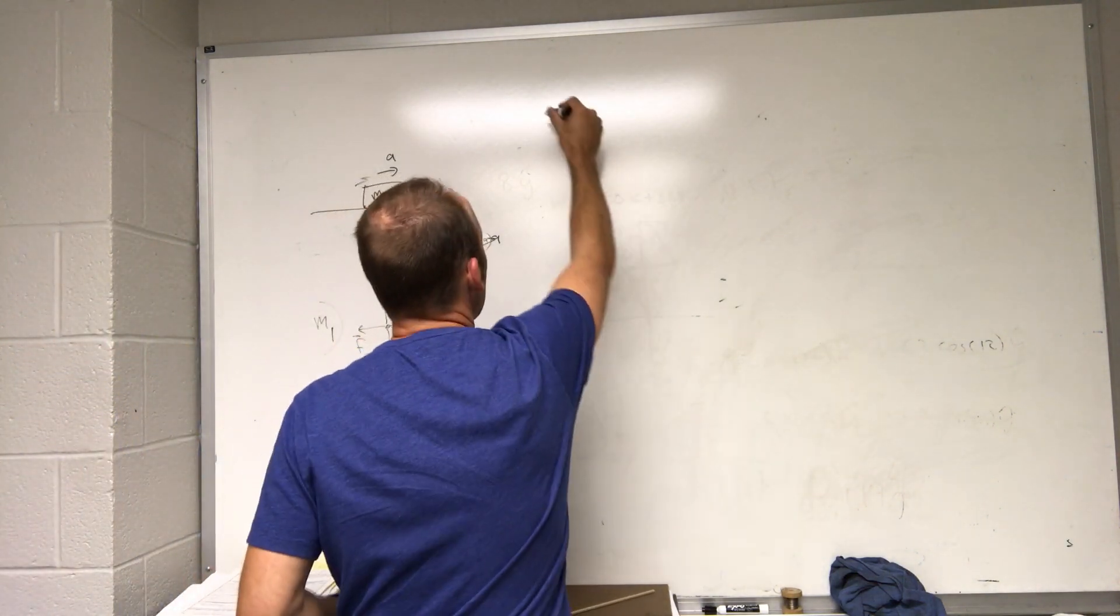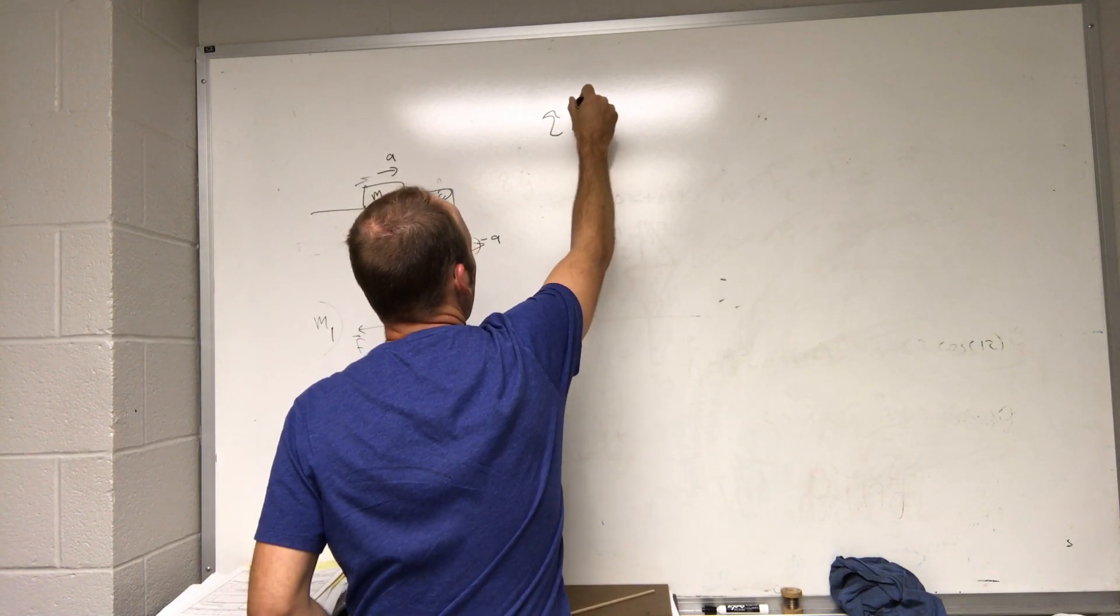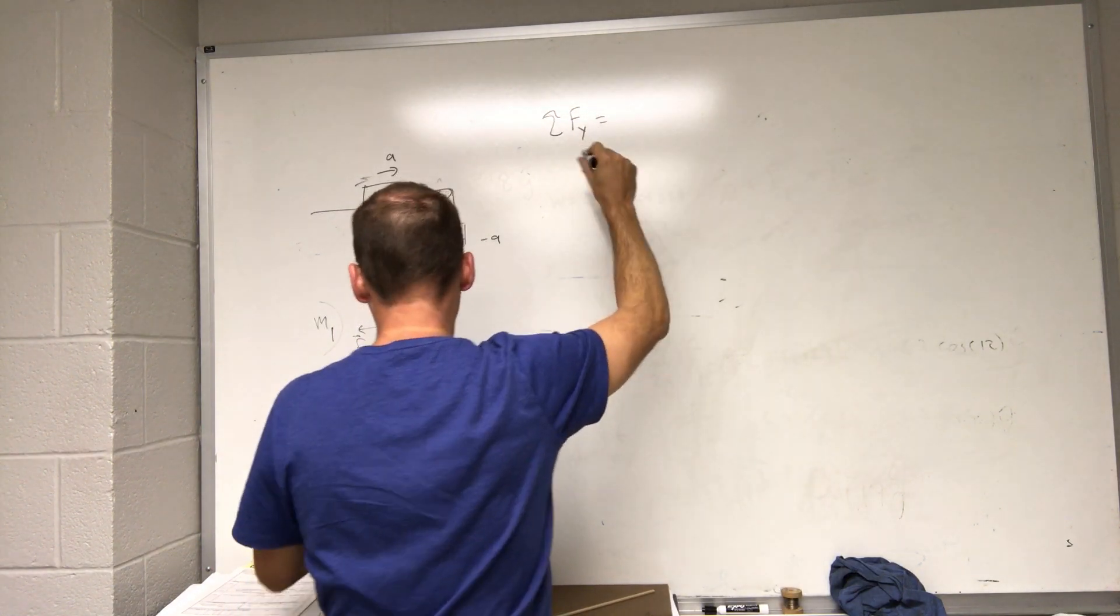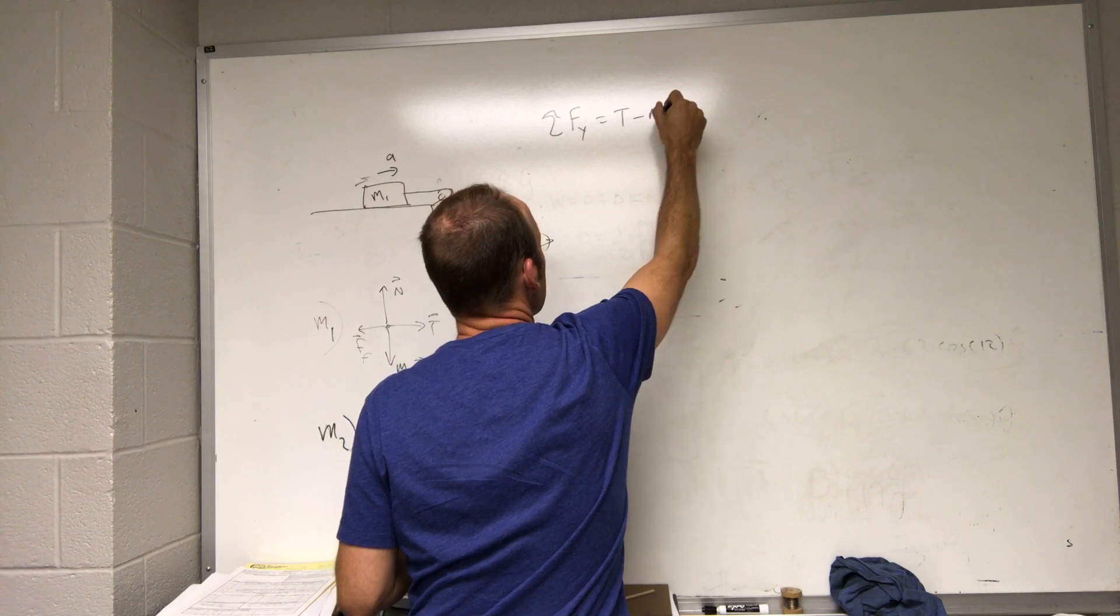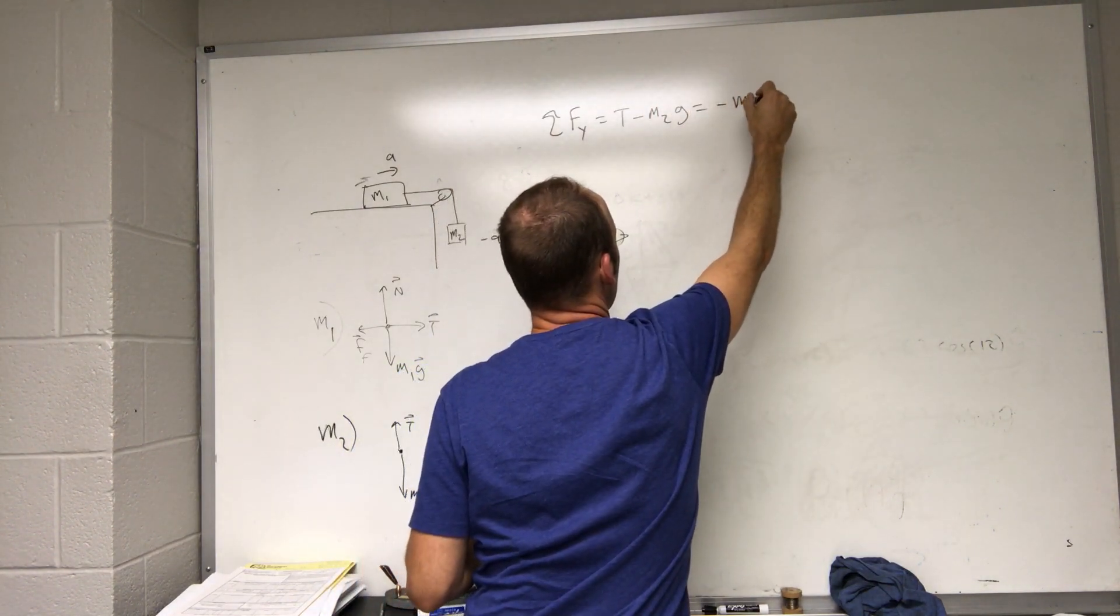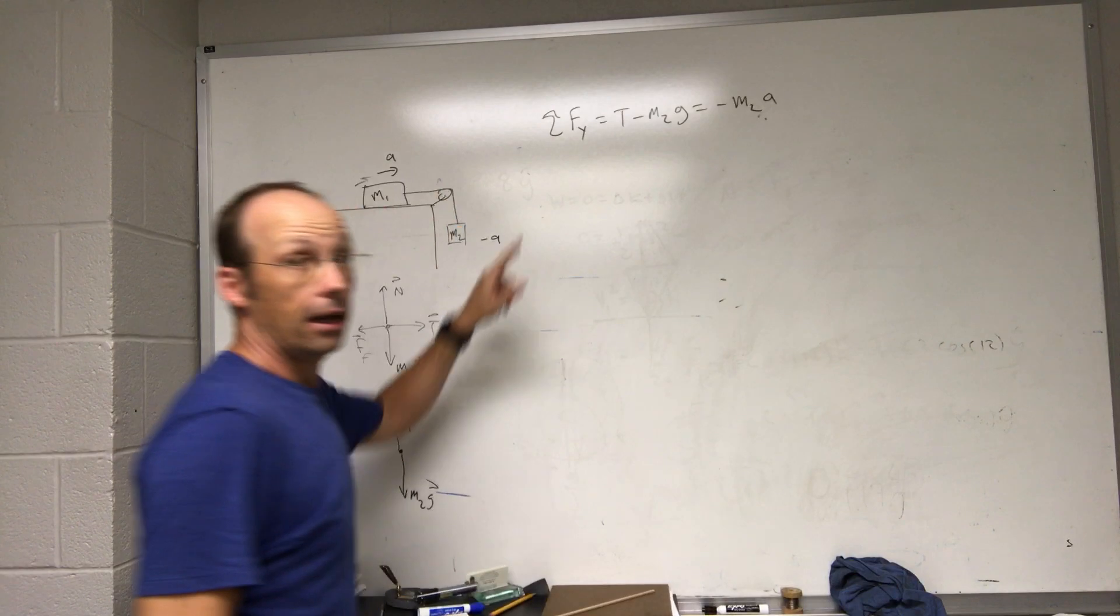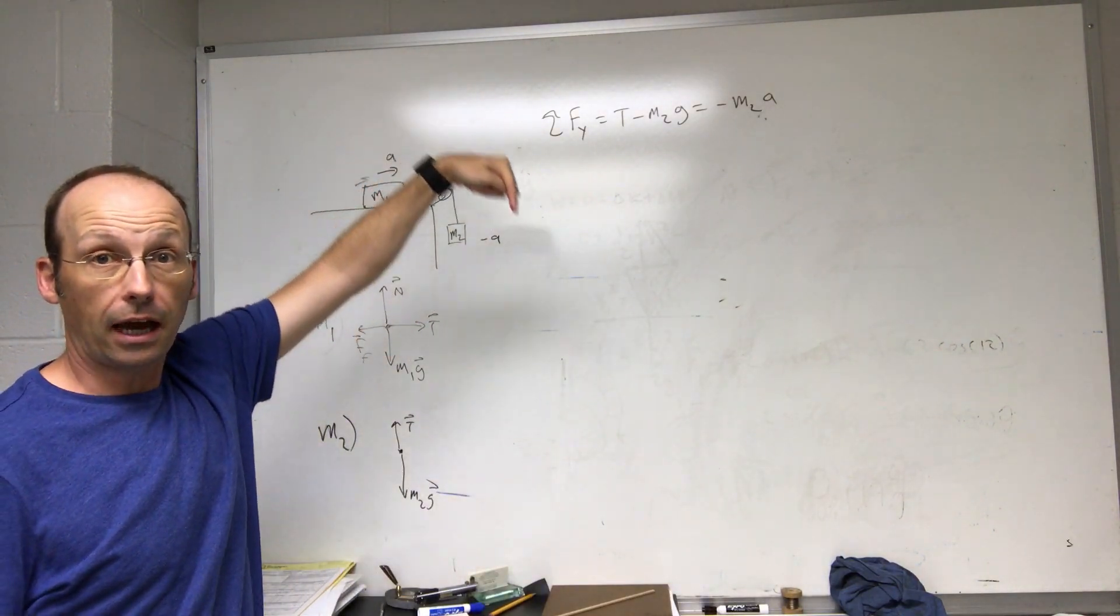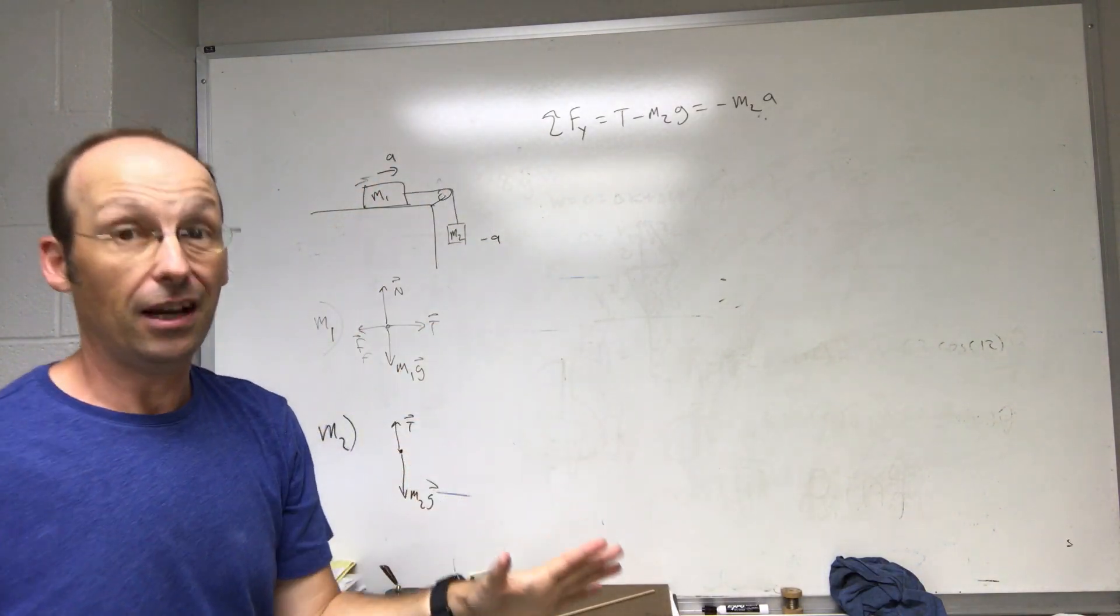So that's going to be sum of the forces in the y direction is going to be T minus m2 G equals negative m2 a. And so that's negative because I've assumed it's accelerating down, which it might not be. It might be at rest, but we'll figure that out. Okay, but this is an important equation.